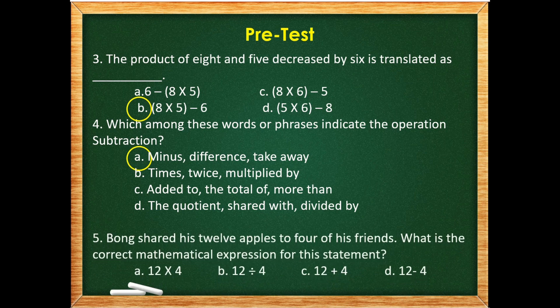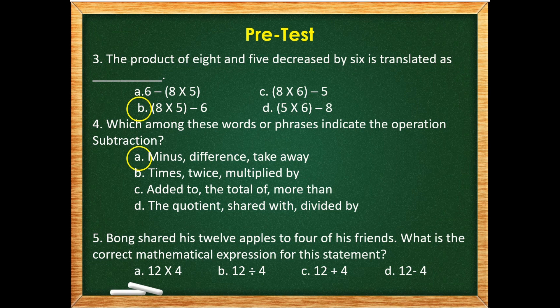Last question. Wong shared his 12 apples to 4 of his friends. What is the correct mathematical expression for this statement? A. 12 times 4, B. 12 divided by 4, C. 12 plus 4, or D. 12 minus 4.